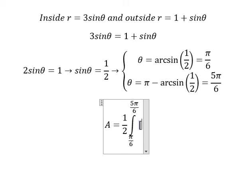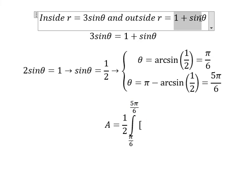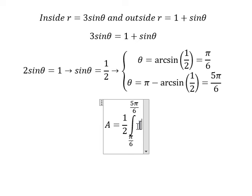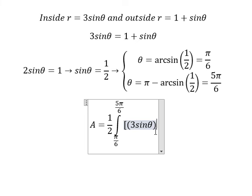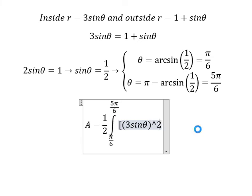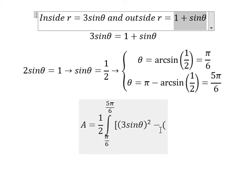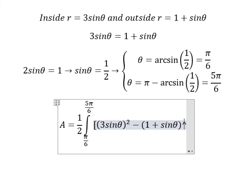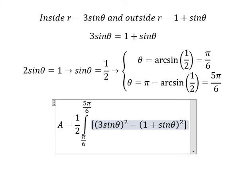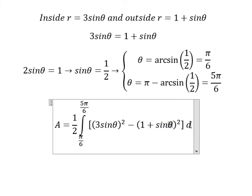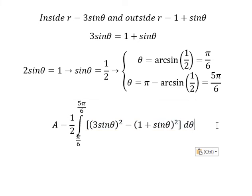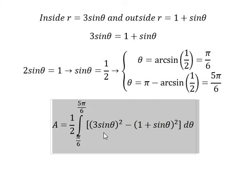And we know that outside means this one is smaller than this one. So we have 3 sine theta, so we put power 2 in here, minus this one to the power of 2. And we have d theta. Now we need to calculate this one.